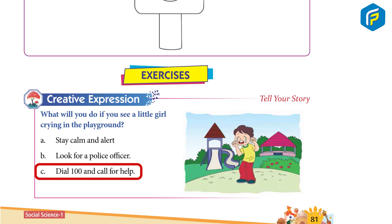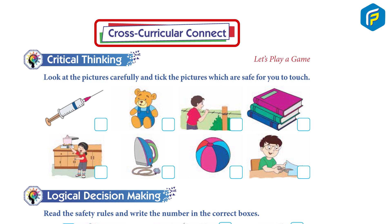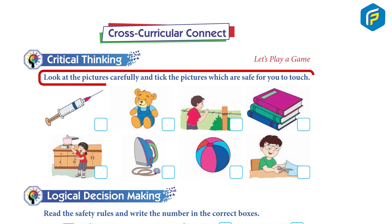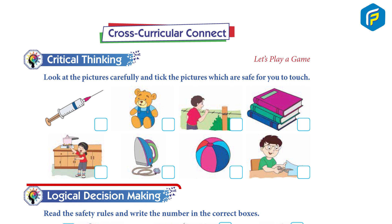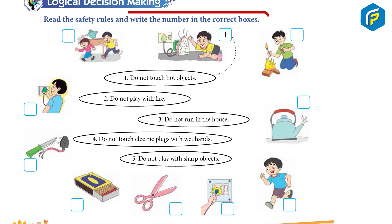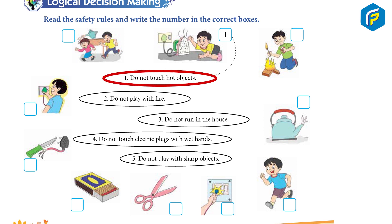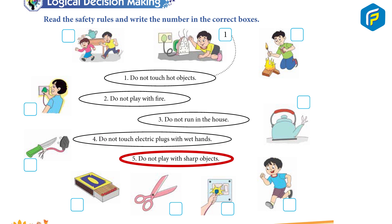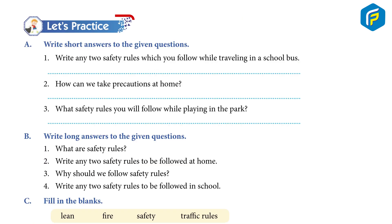Cross-curricular connect — critical thinking: Let's play a game. Look at the pictures carefully and pick the pictures which are safe for you to touch. Logical decision making: Read the safety rules and write the numbers in the correct boxes. One: do not touch hot objects. Two: do not play with fire. Three: do not run in the house. Four: do not touch electric plugs with wet hands. Five: do not play with sharp objects.